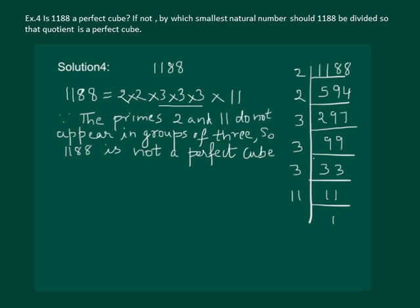So we will write that since the primes 2 and 11 do not appear in groups of 3, so 1188 is not a perfect cube. Also to answer the second part of the question, we can see that if we divide this factorization by 2 into 2 into 11,